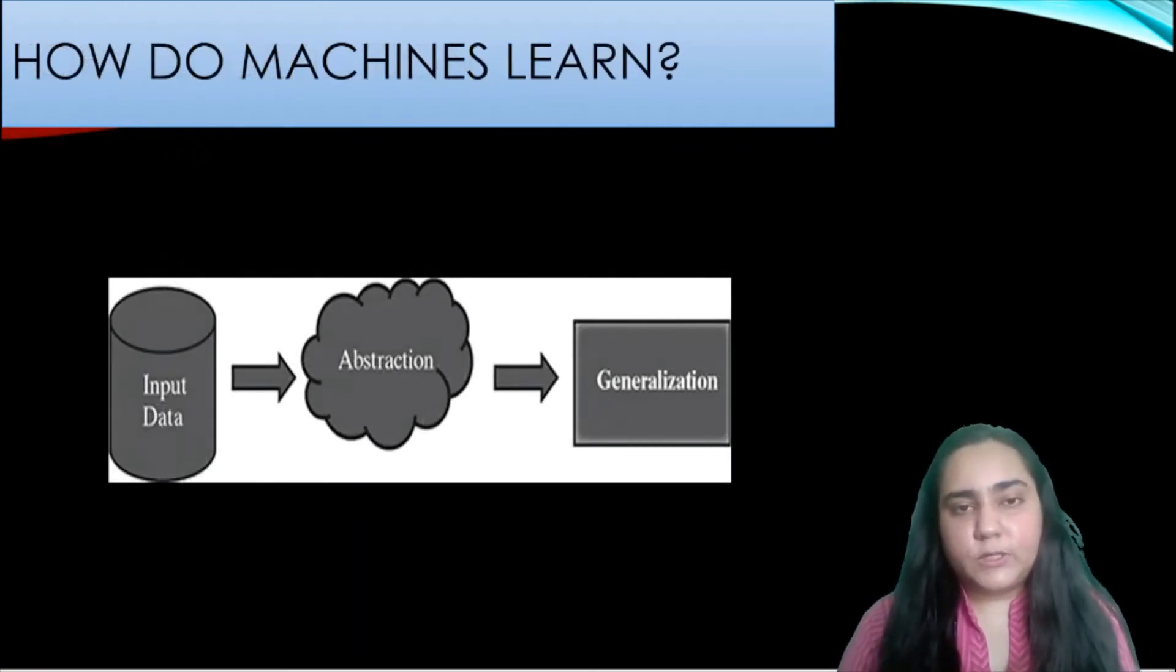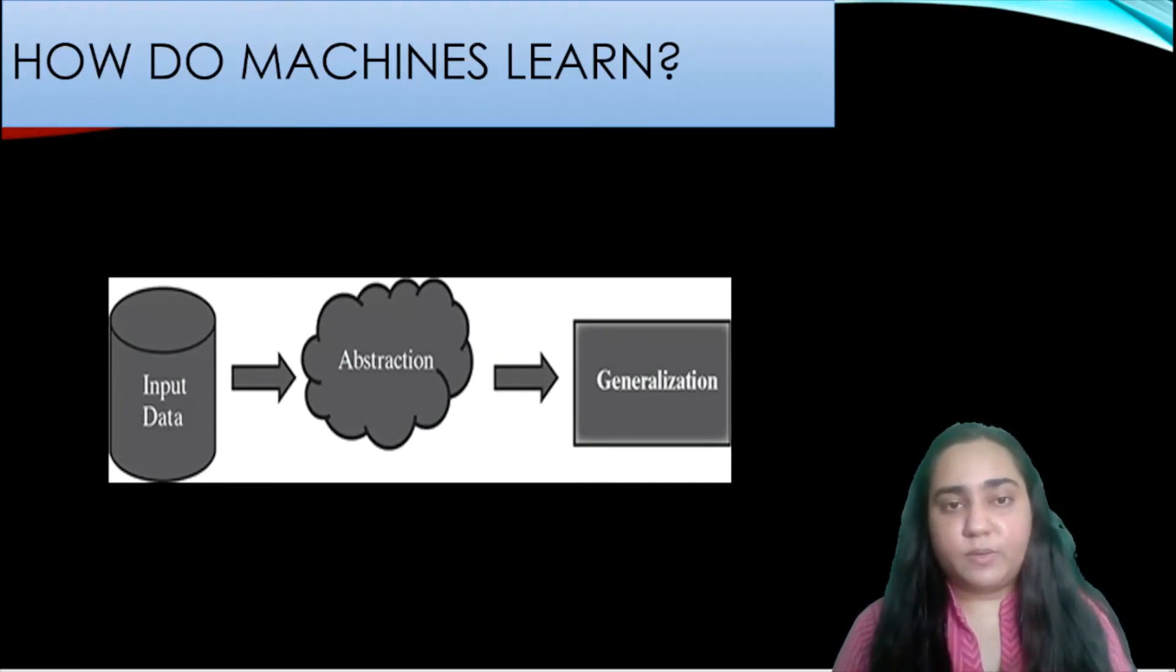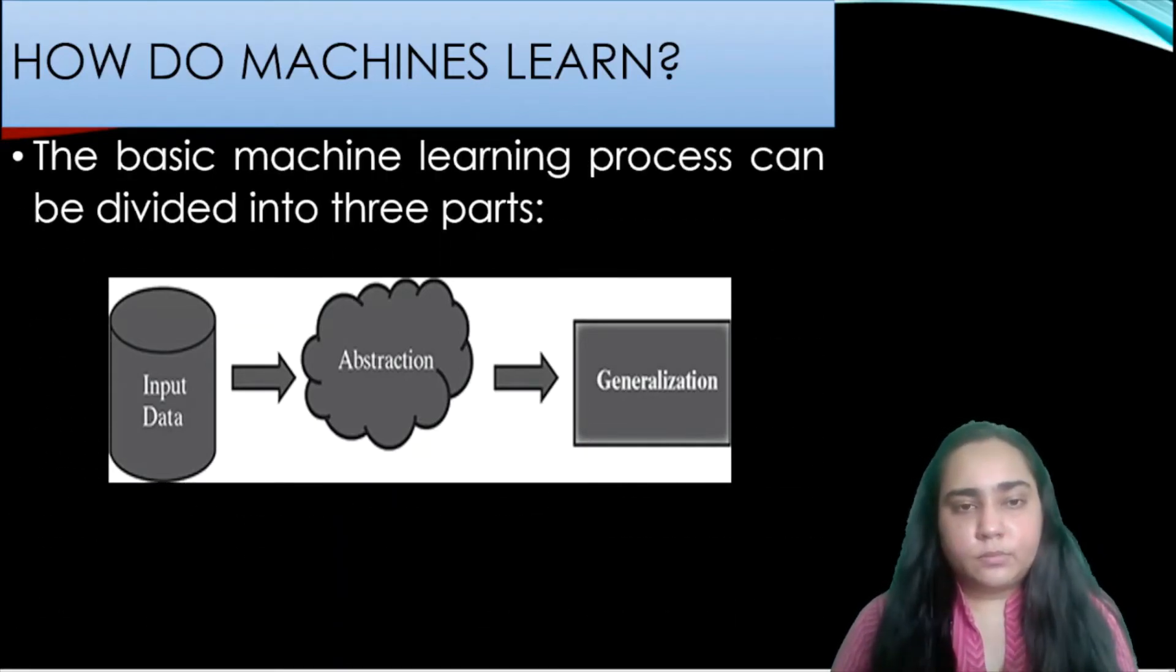Now how exactly do machines learn? We are coming back to that question now and it is basically in this manner: you have input data, you have abstraction and you have generalization. In this video we are going to get a brief overview of how that happens and we'll try to draw an analogy between how humans learn and how machines learn.